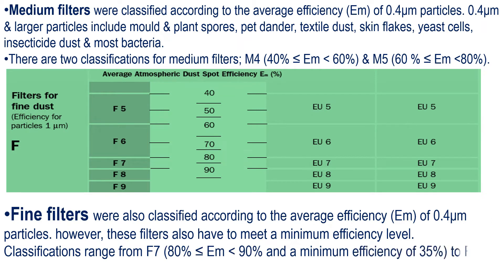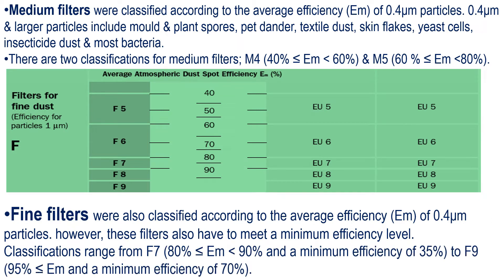F ratings — fine filters — were also classified according to the average efficiency of 0.4 micron particles. However, these filters also have to meet a minimum efficiency level. Classifications range from F7 — 80% ≤ EM < 90% with a minimum efficiency of 35% — to F9 — 95% ≤ EM — with a minimum efficiency of 70%.